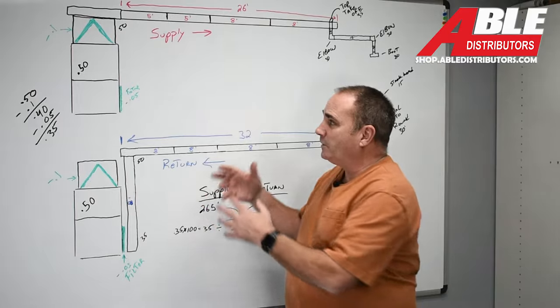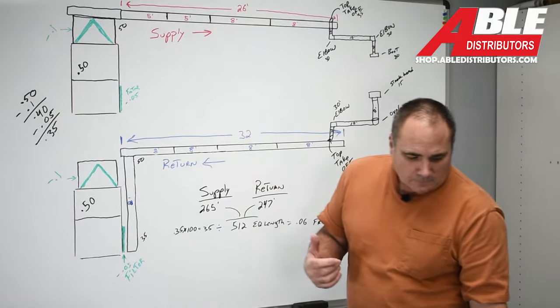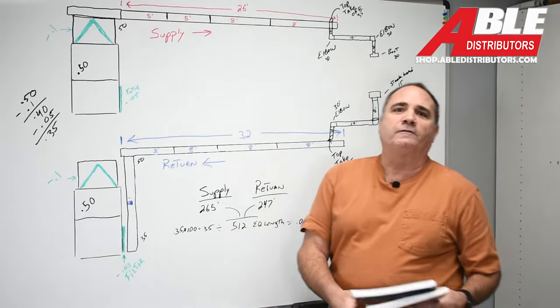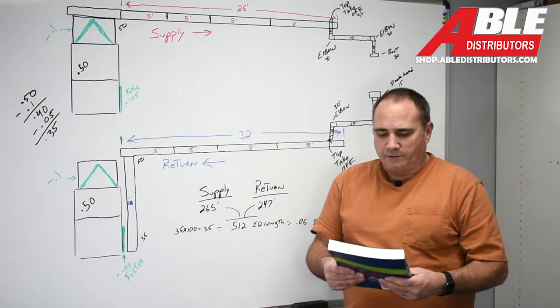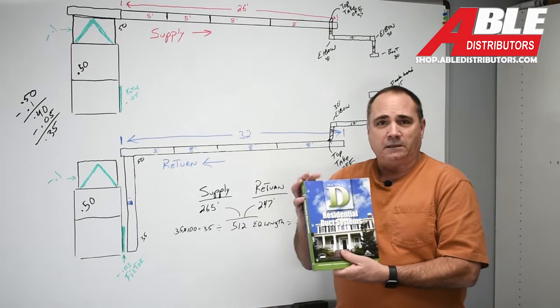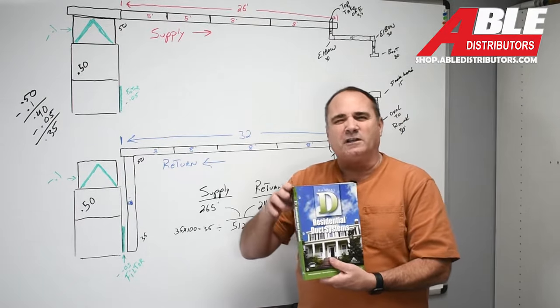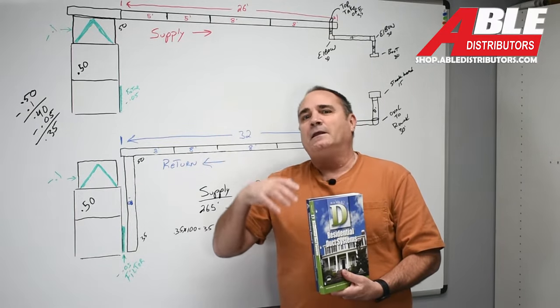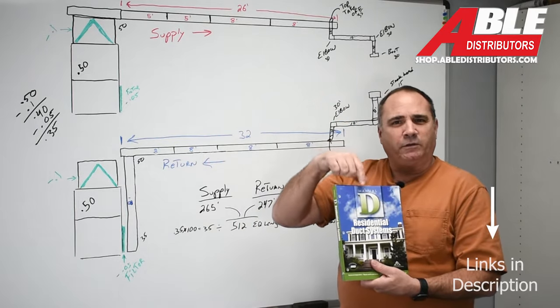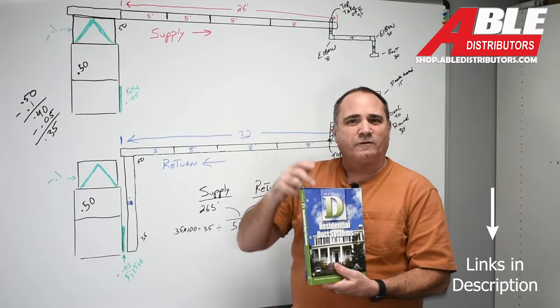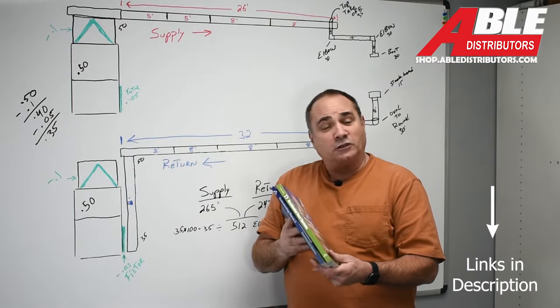So everything I'm going to be talking about here, the air conditioner contractors of America put out a manual D. Now the hardcover one is going to run you about 180 bucks. This one I'll try and put a link below.